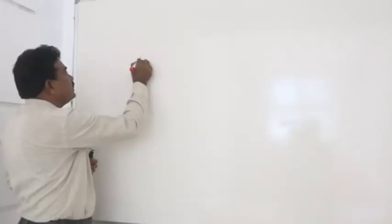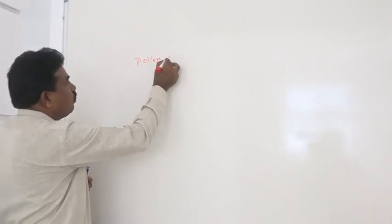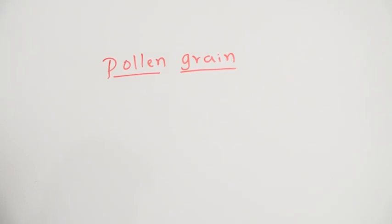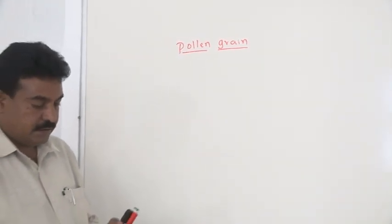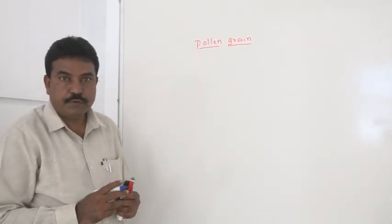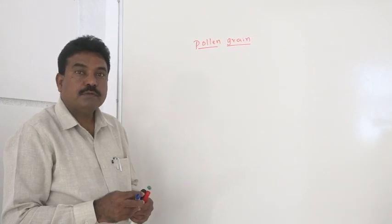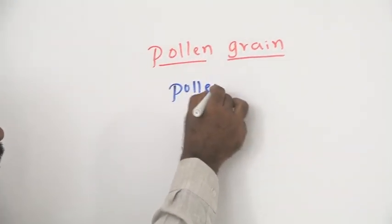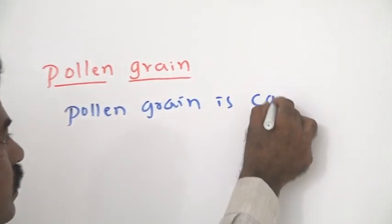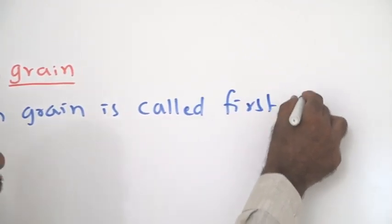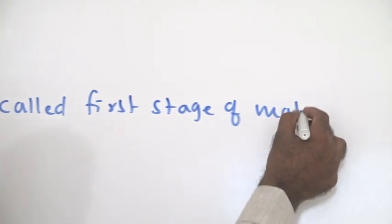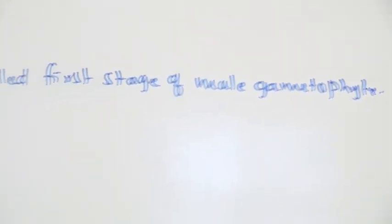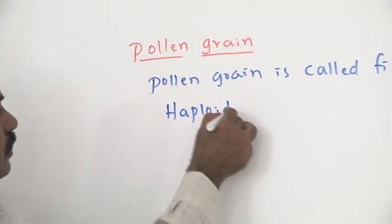When you consider pollen grain, it is the first stage of male gametophyte composed of haploid vegetative cell and generative cell. Therefore, pollen grain is called first stage of male gametophyte. It is composed of haploid large vegetative cell and haploid small generative cell.